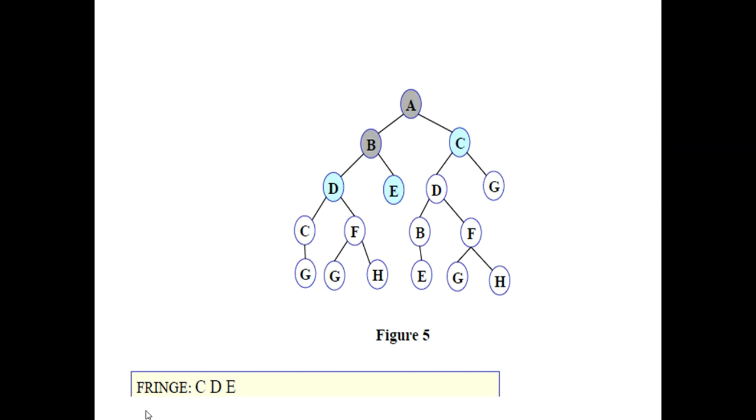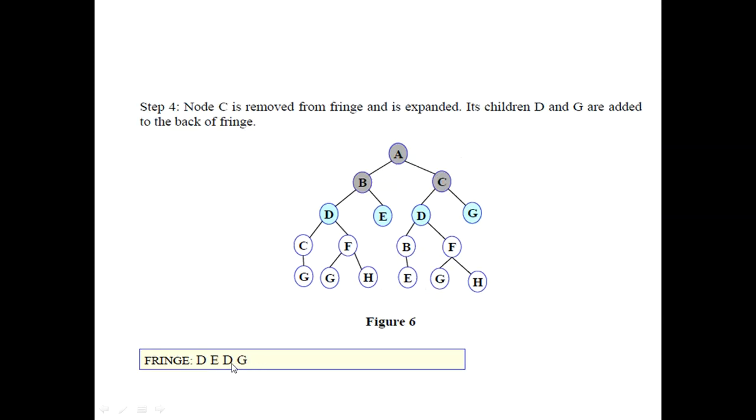Now C is there. We will pick C from here and see what are its children. You can see from this diagram C is having D and G as its children. D and G will be picked and they should be placed at the right side after E. That means we will have D, E, and then D, G as you can see here. This will be the nodes that we will have in fringe.